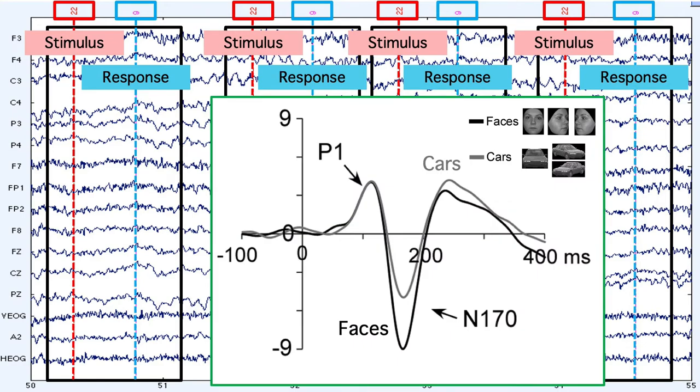Then we'd take all of the epochs for a given stimulus type and average them together. For example, in an N170 experiment with faces and cars, we'd grab all of the epochs for the face stimuli and make one average, then grab all the epochs for the car stimuli and make another average.